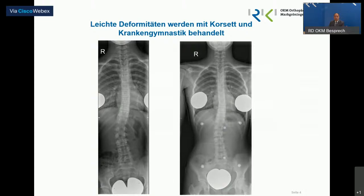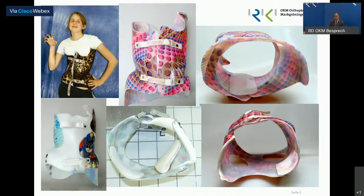Was machen wir mit diesen Skoliosen im leichteren Stadium? Diese linksseitige Krümmung von etwas über 20 Grad wird natürlich nicht operiert, sondern man macht das mit dem Korsett. Man kann auf der rechten Seite sehen, wie man durch Druck von außen mit dem Korsett eine solche Verkrümmung gut in den Griff bekommt und im Wachstum lenken kann. Wir benutzen hier im Hause ein sogenanntes Gênot-Korsett, bei dem Pelotten eingearbeitet sind und auf der anderen Seite Freiräume geschaffen werden, wohin die Wirbelsäule ausweichen kann. Das hat heute nichts mehr gemein mit den Korsetten, wie sie vor Jahrzehnten noch gebaut worden sind – sie sind durchaus tragbar.